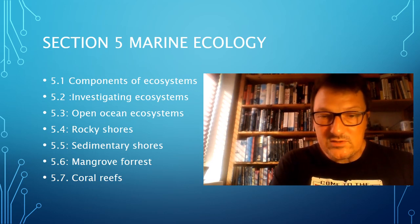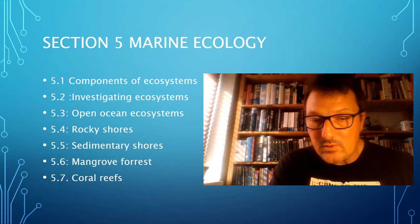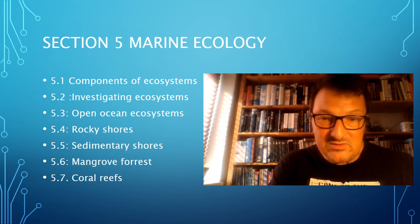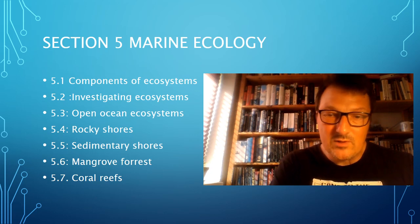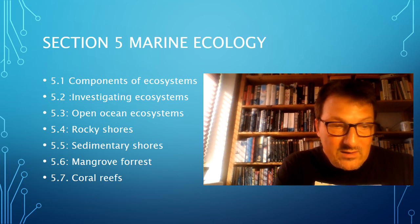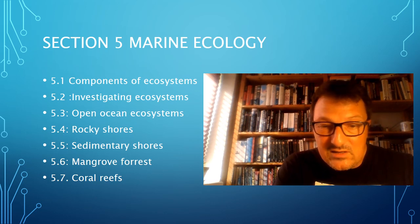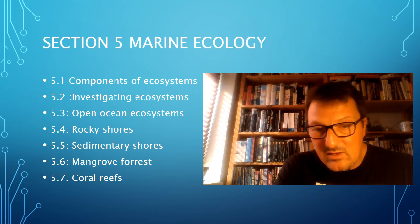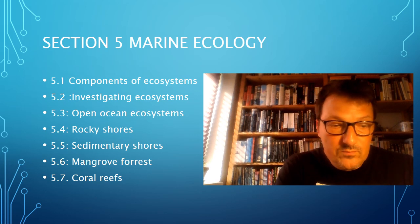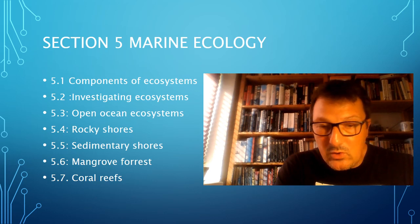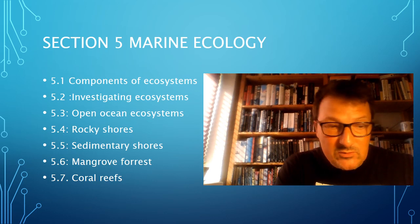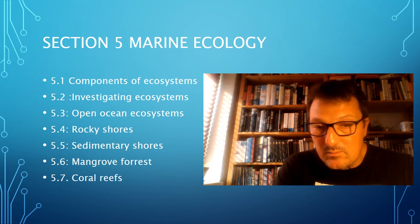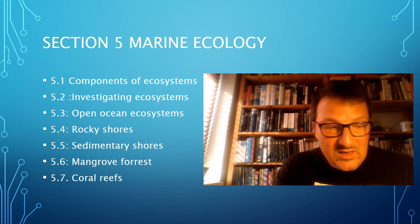5.4 is rocky shores — shores that are affected by wave action, a subject that's been part of marine science ever since the class started, so a very classical subject. We'll look at environmental factors affecting the rocky shores, and how biotic and abiotic factors affect the distribution of species on the shore. 5.5 used to be called sandy shores, but now it's called sedimentary shores — shores where you have sand, silt, and mud — and how that affects species living there.